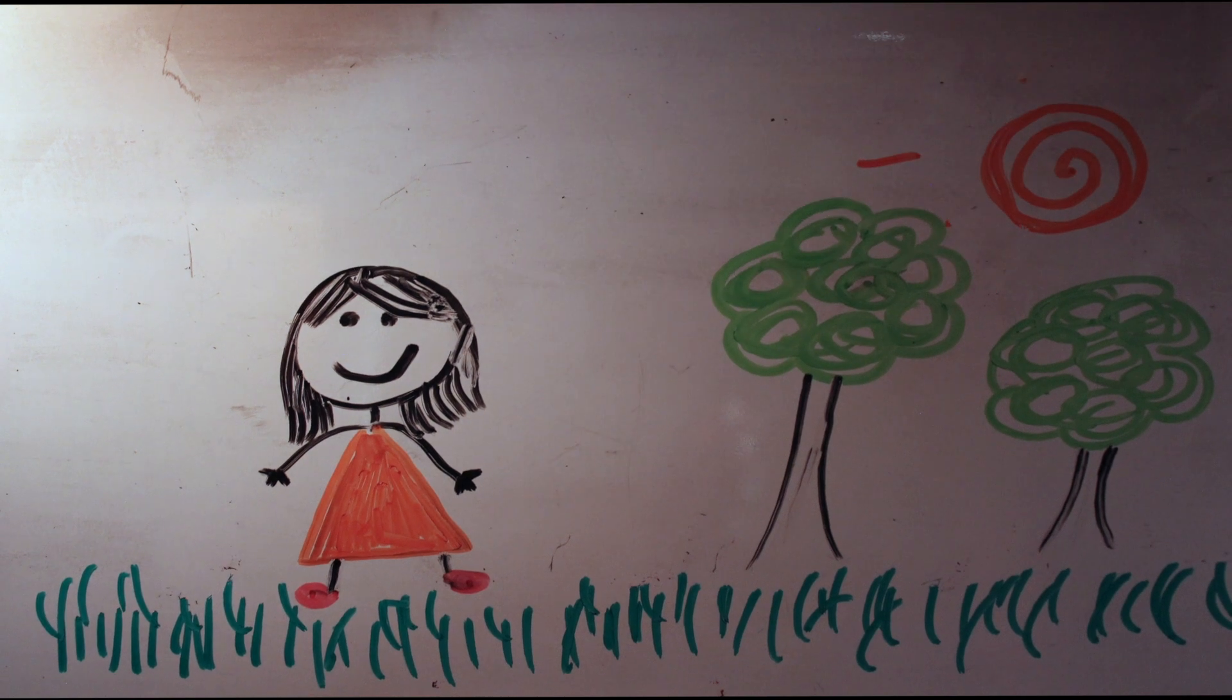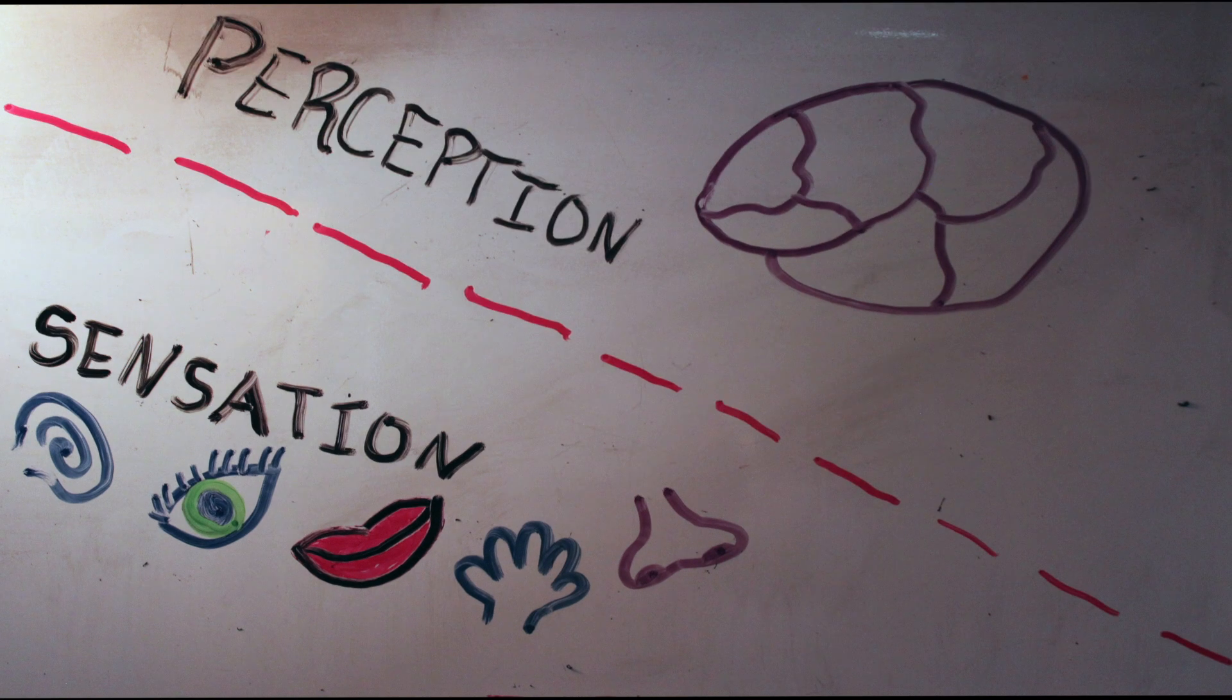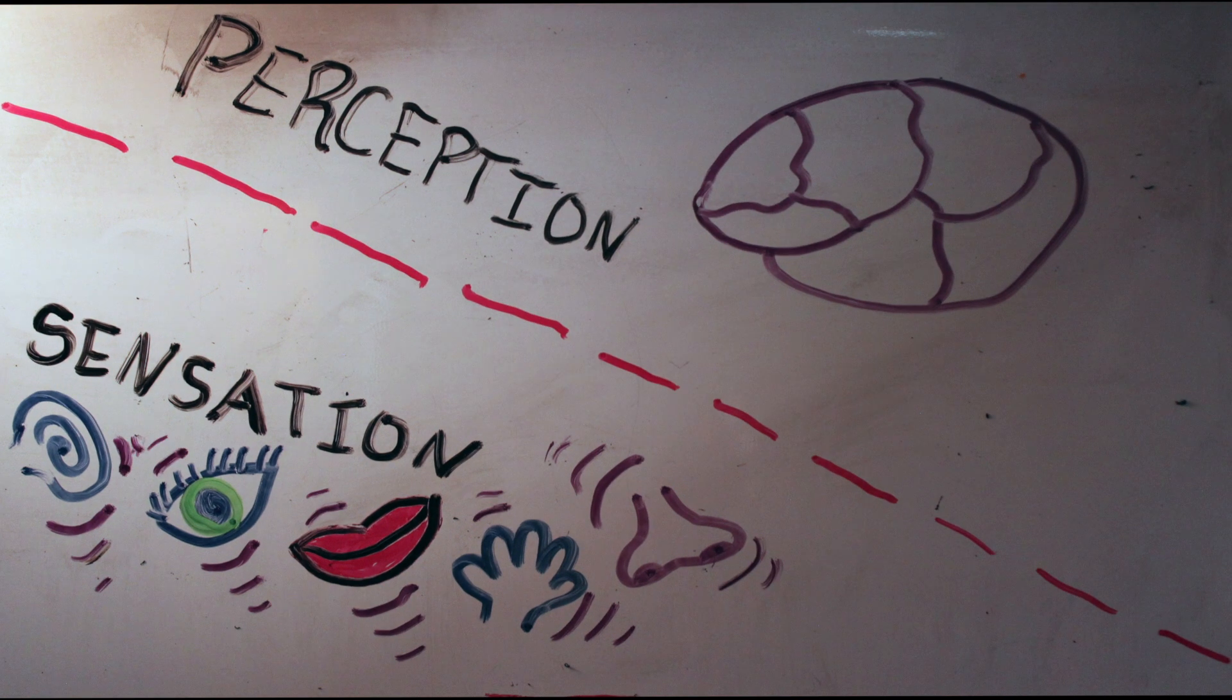Our experience of the world through each of the five senses can be divided into two categories: sensation and perception. Sensation involves physical stimuli interacting with our receptors to create signals.